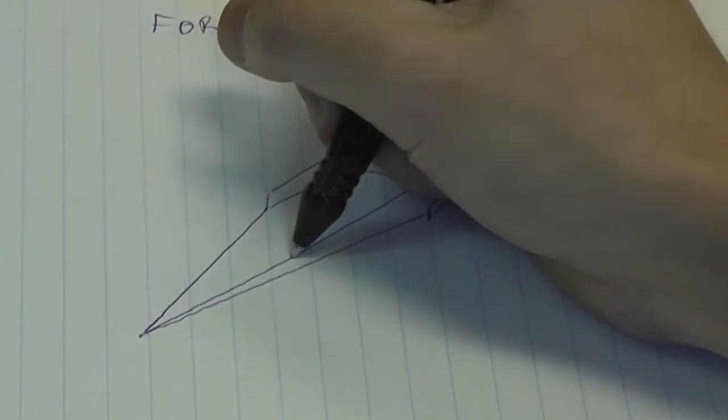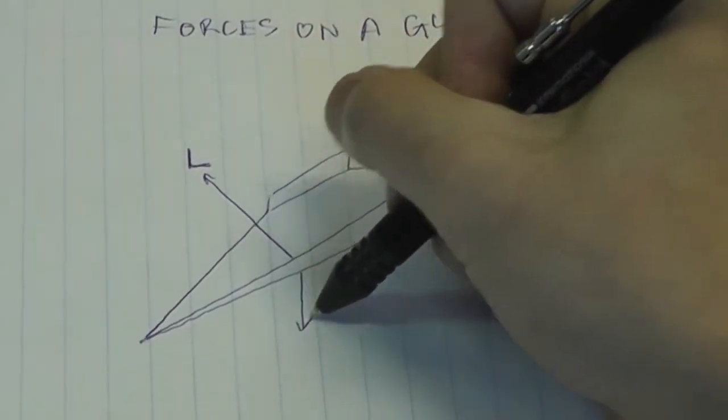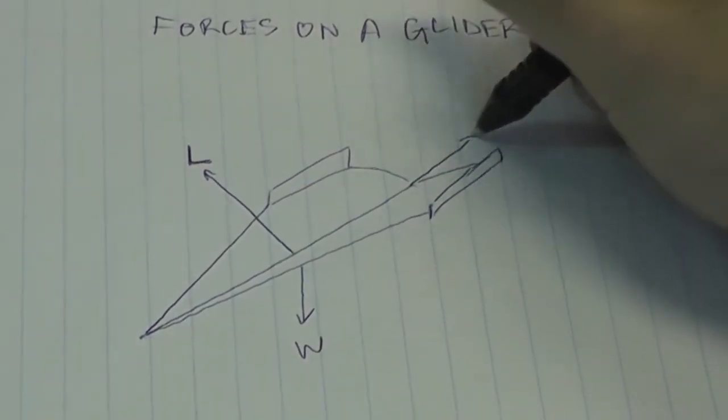So there's lift, which acts in a slanted forward direction. There's the weight, which comes straight down. And there's drag, which attempts to pull the glider back.